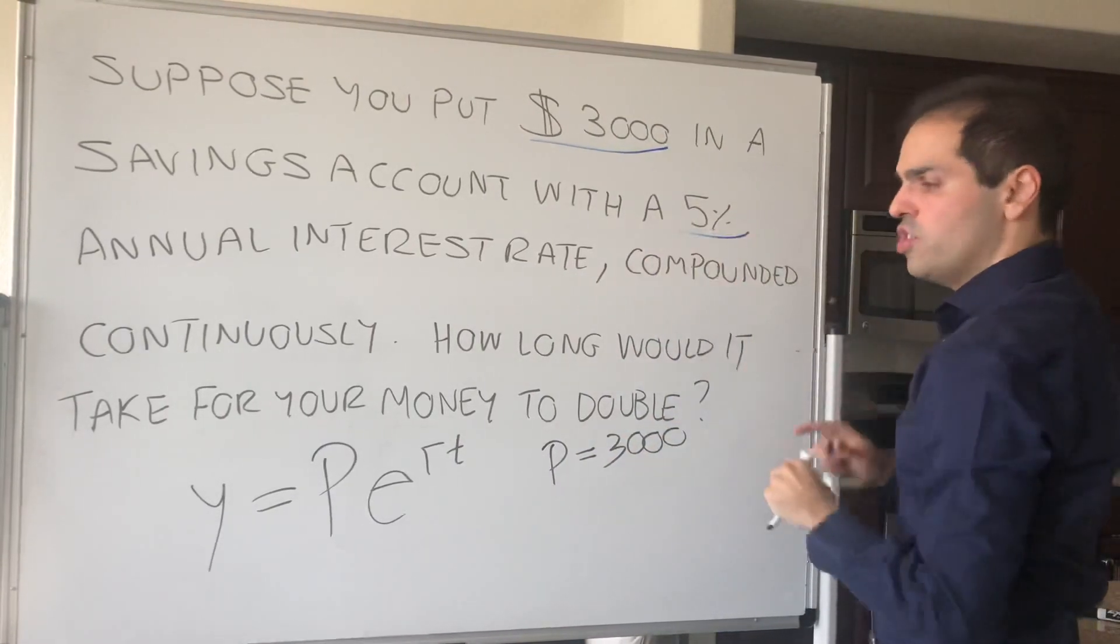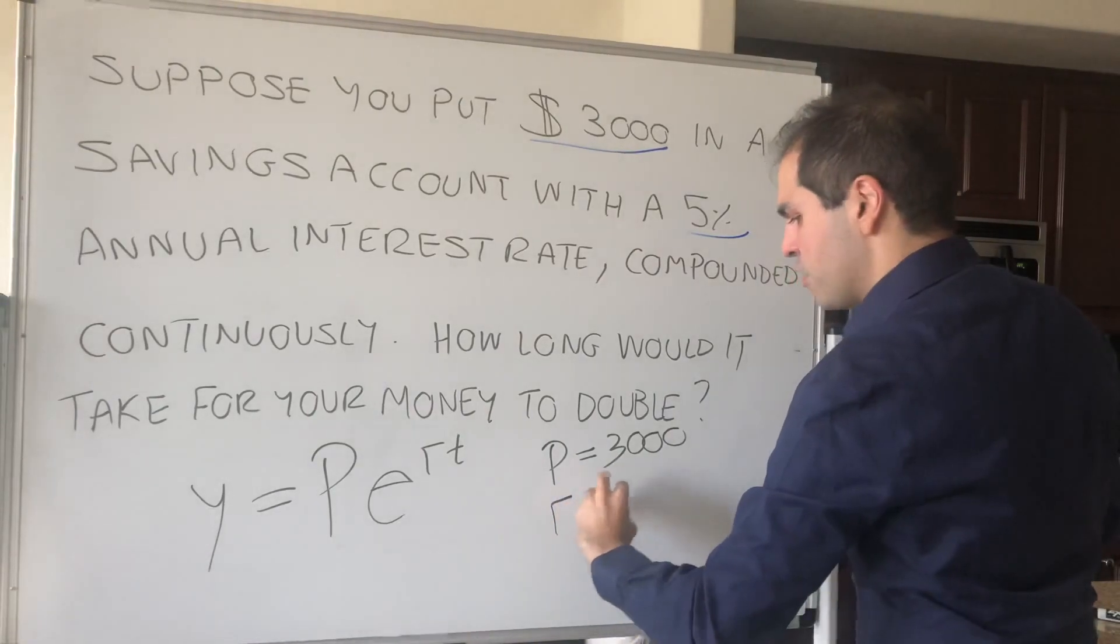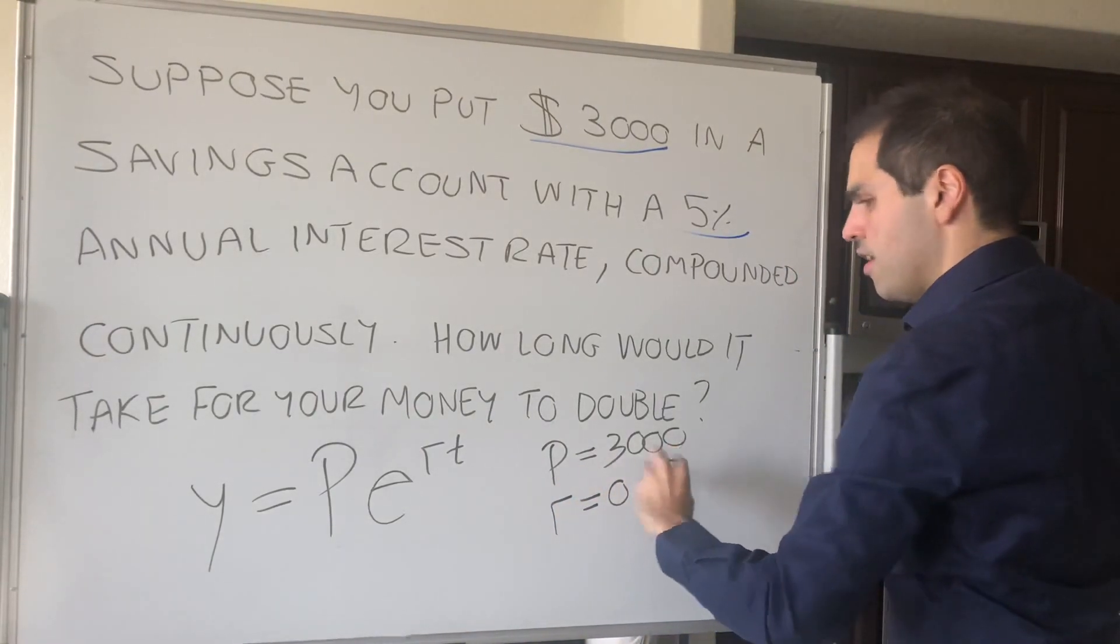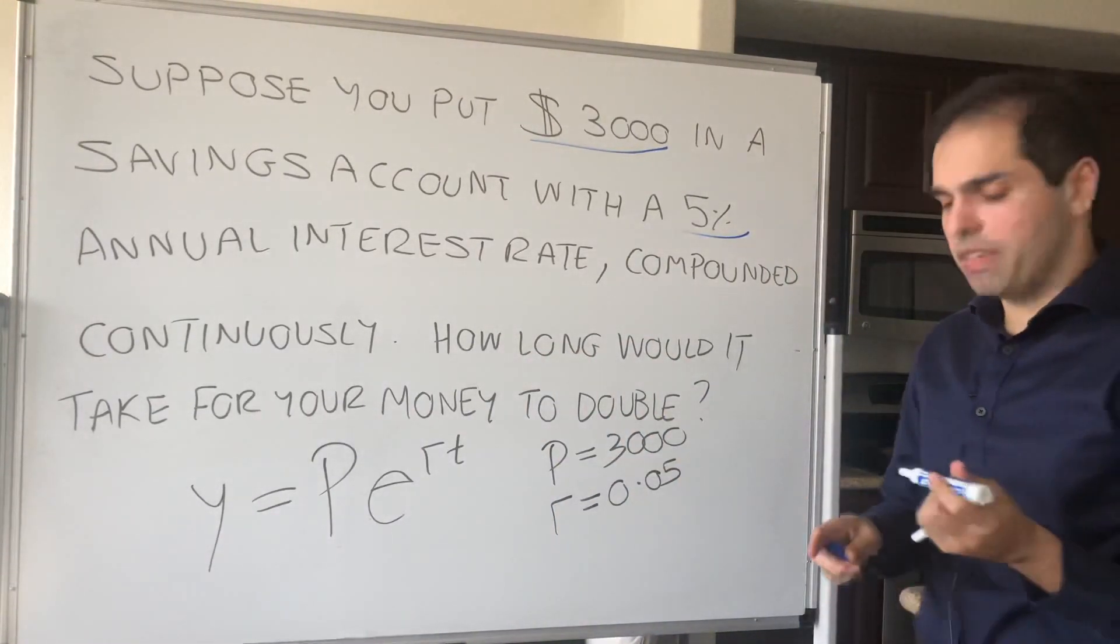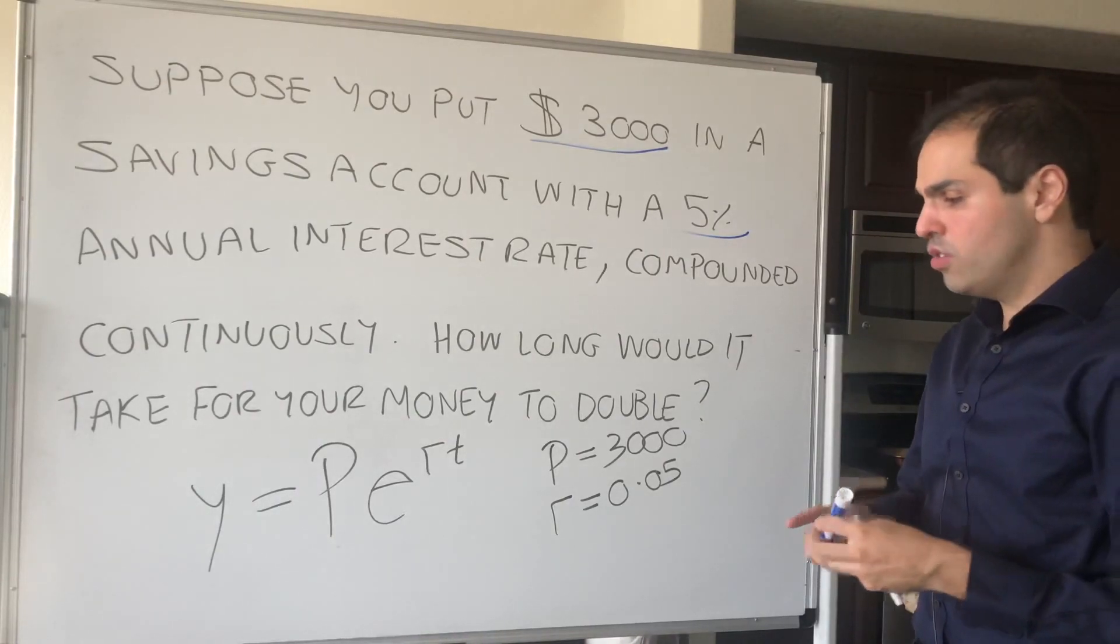R is the interest rate, which is 0.05, and T is just the time that it takes for your money to double.